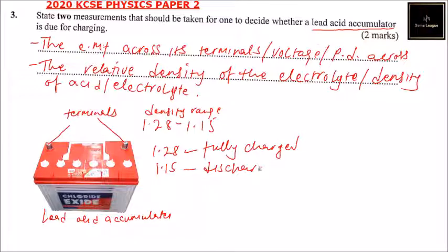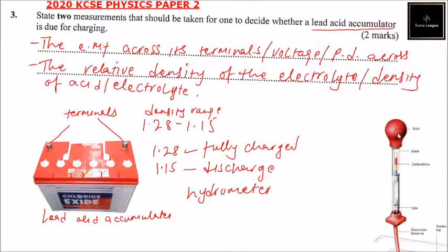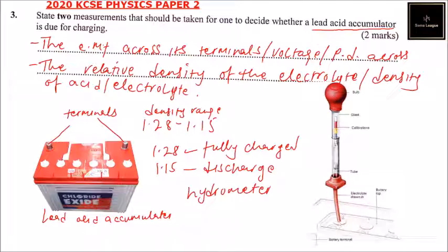The item that is used to do that is known as a hydrometer. Hydrometer looks like this. This is a hydrometer. You draw out the liquid acid or electrolyte from the terminals, from these cups here. We open the cup, you draw, and you'll be able to see and get the density using this hydrometer.